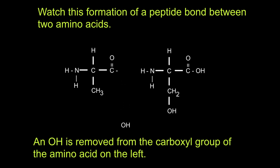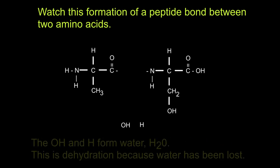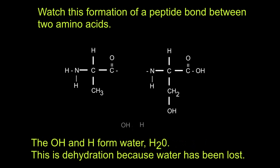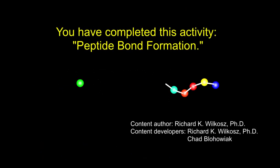Watch this formation of a peptide bond between two amino acids. An OH is removed from the carboxyl group of the amino acid on the left, and an H is removed from the amine group on the right. The OH and H form water (H2O) — this is dehydration because water has been lost. A covalent bond can now form between the amino acids: this is a peptide bond. You have completed this activity on peptide bond formation.